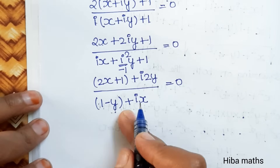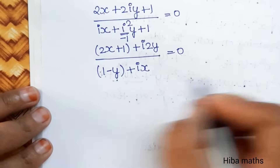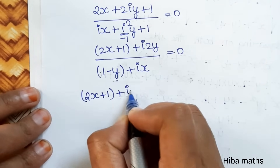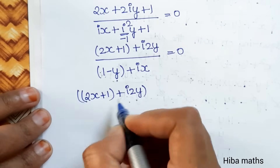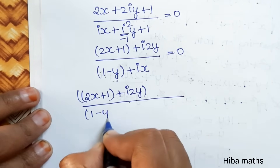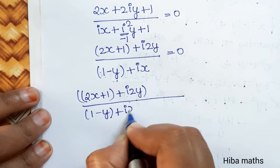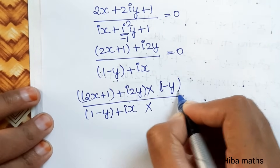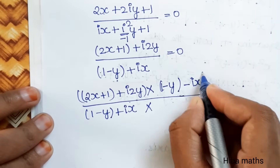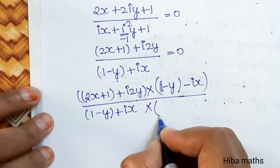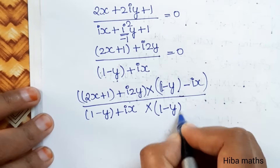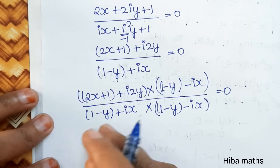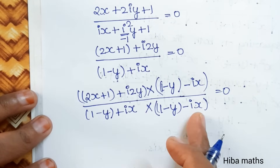To find the imaginary part, we multiply by the conjugate. The numerator is 2x + 1 + i(2y) and the denominator is 1 − y + ix. The conjugate of the denominator is 1 − y − ix. So we multiply numerator and denominator by (1 − y − ix).